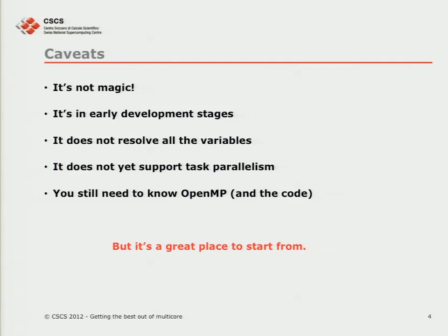It's definitely not magic, though. It is in the early development stages, so you guys probably are some of the first people to ever use Cray Reveal. If you find any bugs, please let us know and we'll pass it on to Cray. It will not resolve all the variables, and it does coarse Cray parallelism — you have a loop, you put a directive. It won't identify critical regions, atomic, or barriers. So at the end of the day, you still need to understand OpenMP and understand your code, but it can give you a great place to start from to help you work through everything.